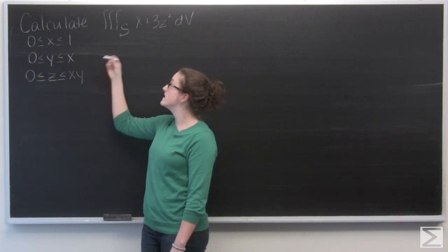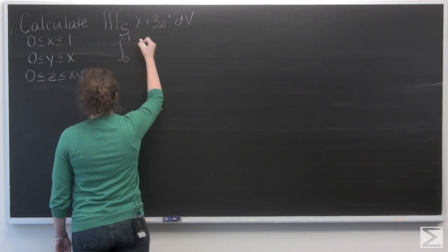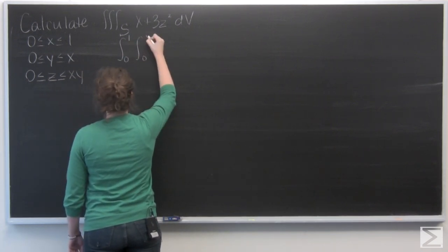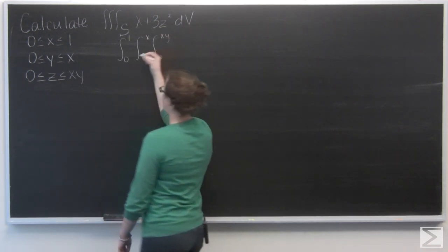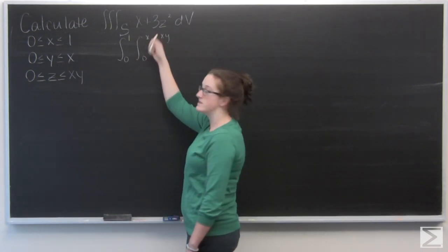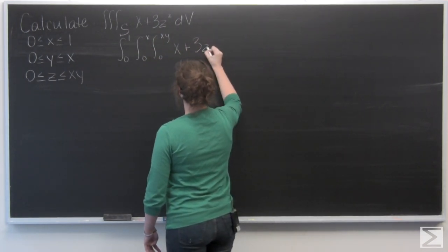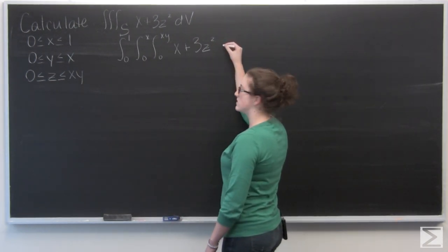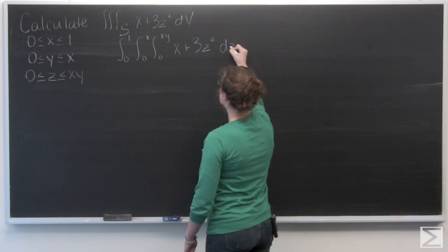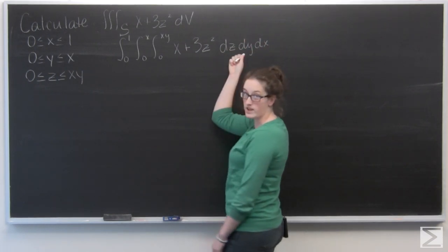So I'm going to go ahead and add those into the integral signs. And then our inside function just stays the same. And then we just want to write in the order. So I have dz, then dy and dx.